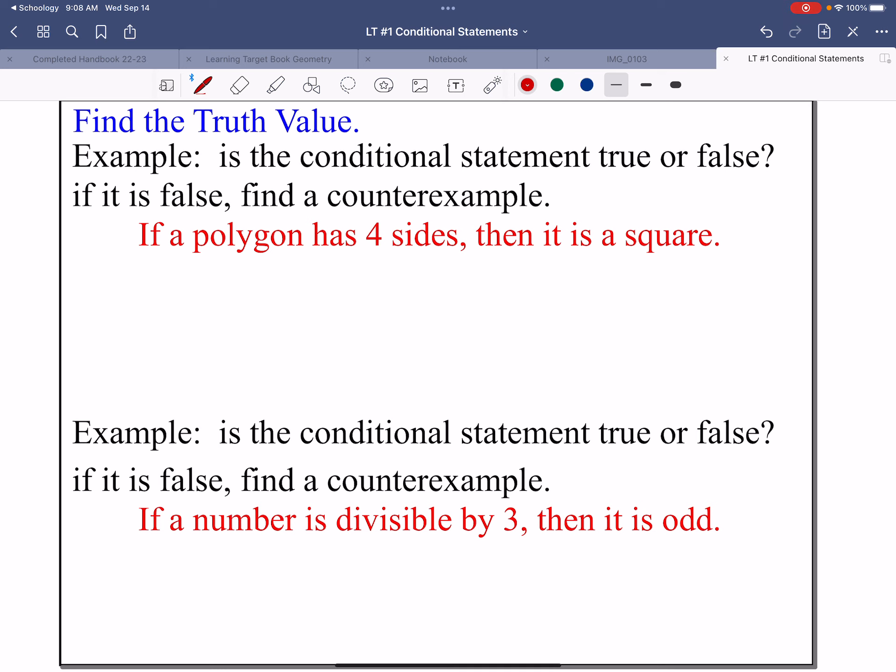Let's find some truth values. Example: Is the conditional statement true or false? If it's false, find a counterexample. If a polygon has four sides, then it is a square. Well, this is false because I could have a polygon with four sides. That part has to be true, such as this polygon has four sides. This says then it has to be a square, but what I drew is not a square. It's a rectangle.